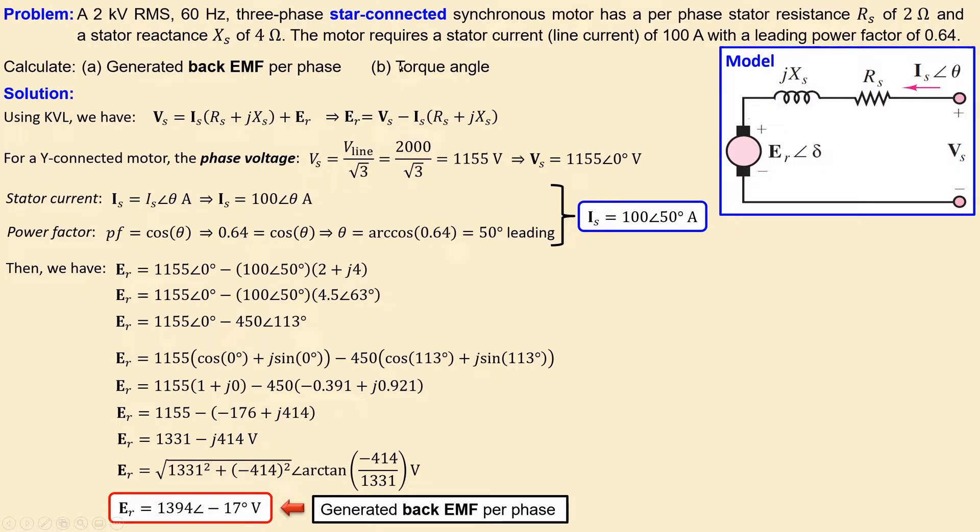Moving on to the torque angle question, we can express the back EMF in this form. The torque angle delta is minus 17 degrees.